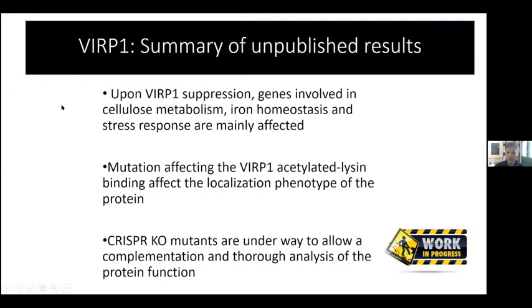To summarize: upon VIRP1 suppression, genes involved in cellular metabolism, iron homeostasis, and stress response are mainly affected. Mutations affecting the VIRP1 acetylated-lysine binding also affect the localization phenotype of the protein. CRISPR knockout mutants are underway and will be used for complementation analysis to see how this affects the plant and viroid infectivity. By the way, our suppressed plants have only a very mild, almost unidentifiable phenotype, and we're trying to understand how that can be for a protein that seems generally quite important. There is some change in cell wall structure, but that's all.